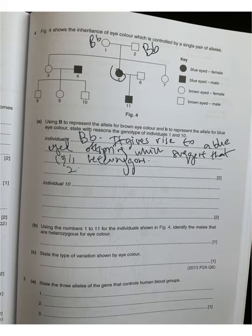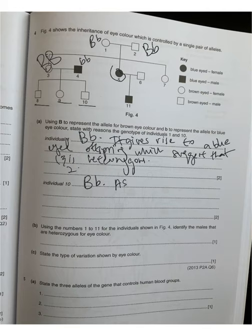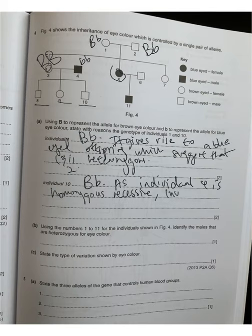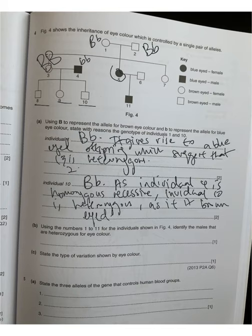Individual one and two are heterozygous. Individual ten is heterozygous. Individual four is homozygous recessive (small b small b). Now identify the males that are heterozygous for eye color: male two is heterozygous, male four is not, male six is heterozygous because it must give rise to a recessive offspring, so it must carry small b. Male eight is heterozygous, and male ten is heterozygous as well.